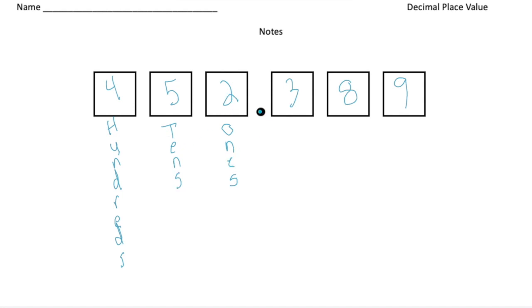But now to the right of the decimal, we're going to talk about smaller numbers. So to the right, we have the tenths digit, the tenths. So we have three tenths.